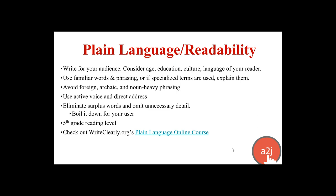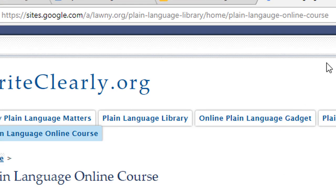5th grade reading level is the level we recommend shooting for. There are tools on the Report tab when you run a full report that will give you your grade ranking for your entire interview and question by question. It will be green if it's under a 7th grade reading level, yellow if it's between 7th and 9th grade, and red if it's over 9th grade. At the very end you'll get your Flesch-Kincaid score. A great tip is to check out WriteClearly.org's plain language online course — they use A to J Author's sister software, Kali Author, to create Kali lessons teaching how to handle plain language in your writing. The URL is sites.google.a.lani.org/plain-language-library-home/plain-language-online-course.